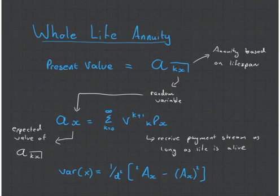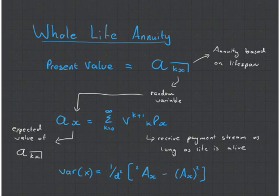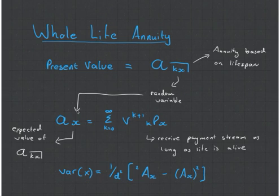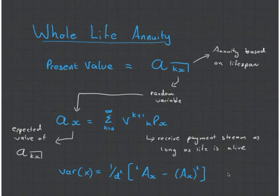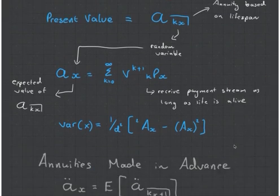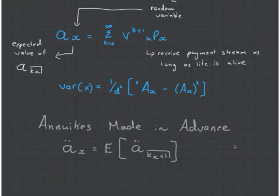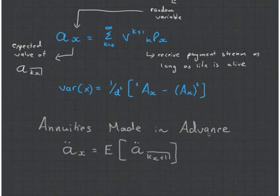Now, just like with the life assurance contracts we spoke about in Chapter 1, you get the same kind of types happening with the annuities. You have the whole life annuity, which is actually the one we just mentioned above. What this one does is it pays out a stream of cash every single year that the person is alive — it pays till infinity as long as you are alive. There is the variance; I'm not going to talk too much about variance in this video — it is important, but it's not essential.